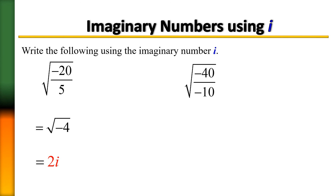For the next example, simplify the fraction under the radical first: negative 40 divided by negative 10 equals positive 4, and the square root of 4 equals 2.